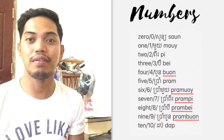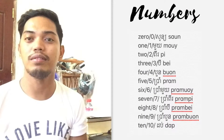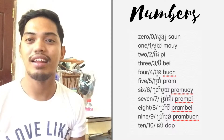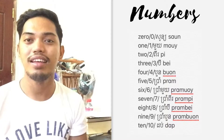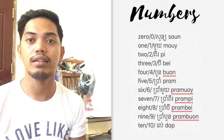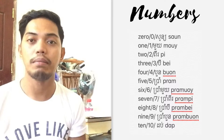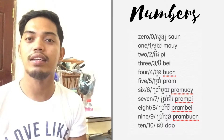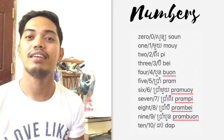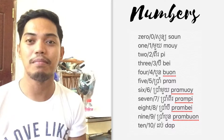To start with, let's have 0: Son. 1: Muy. 2: Ping. 3: Bay. 4: Bun. 5: Prang.